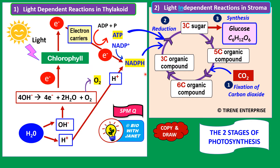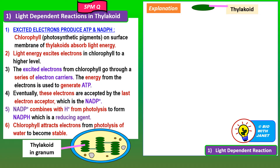Here is the schematic diagram prepared to help you understand and memorize the light-dependent and light-independent reactions of photosynthesis more easily. You can pause the video to copy and draw it. Photosynthesis is divided into two stages: the light-dependent reactions in the thylakoids, and the light-independent reactions in the stroma.